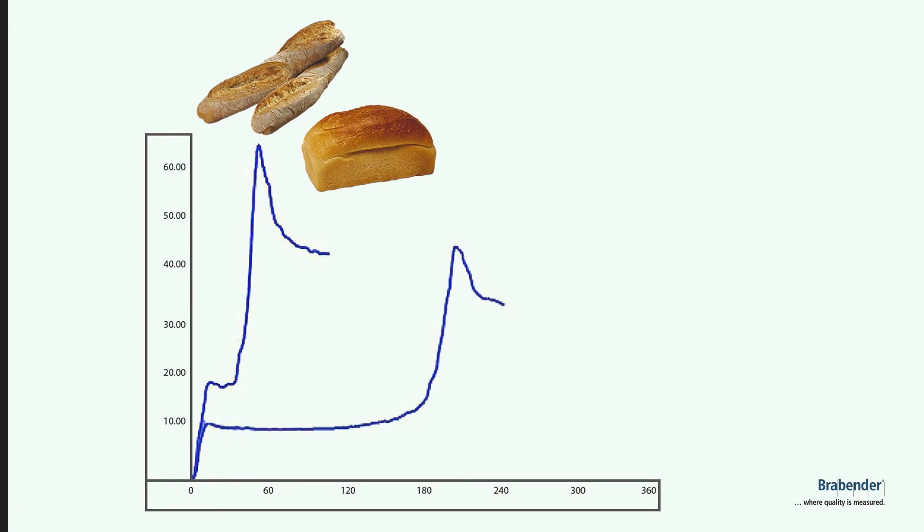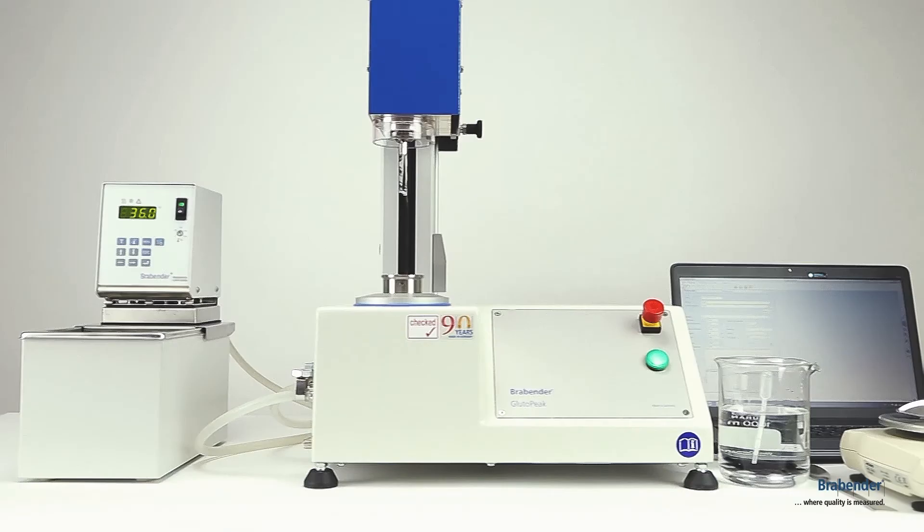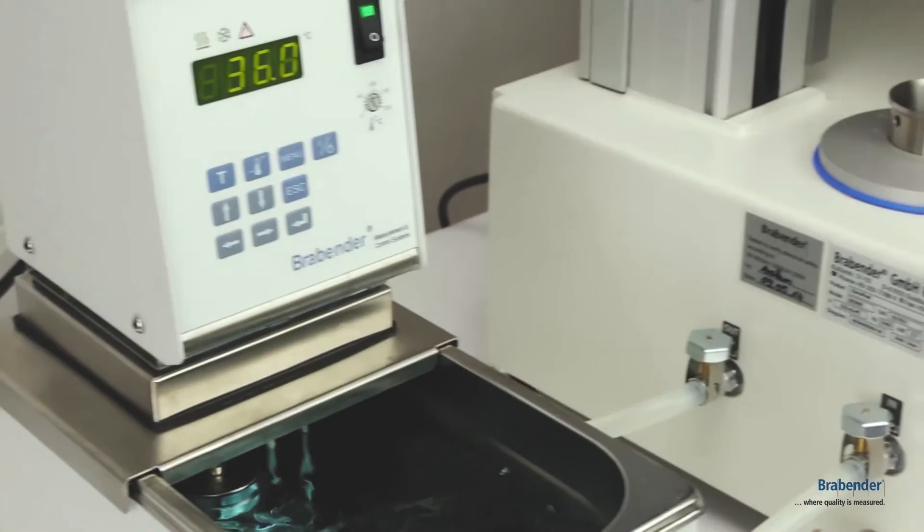While light flour with only low gluten shows longer and flatter peaks. It takes only a few minutes until the torsional moment's curve builds up to its peak and the result is portrayed graphically. This is how easy the Gluto Peak works.